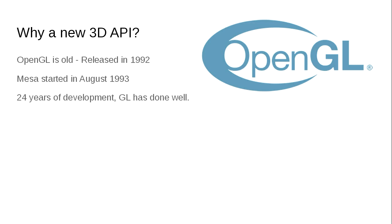It's open source, but it's kind of a 'thrown over the wall' open source — the tests are usually developed internally inside Khronos, validated on everyone's hardware, and then released to GitHub. It's not brilliant but it's way better than what we came from. So the question is: why do we need a new 3D API? What was wrong with our old ones? Well, OpenGL is old — that's no reason to replace it — but it was released in 1992. The Mesa OpenGL implementation started in August 1993, so about 24 years of development.